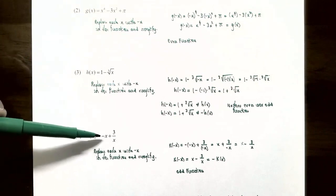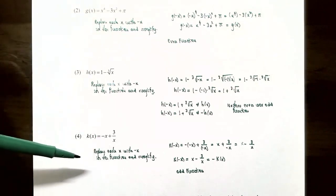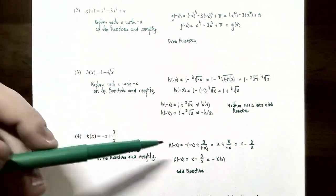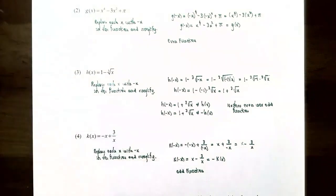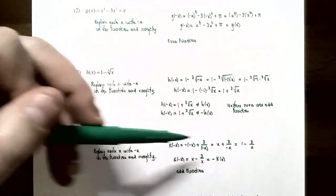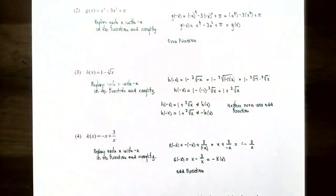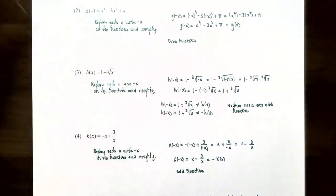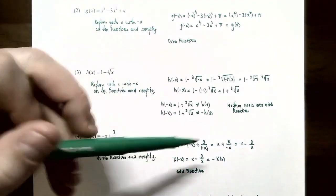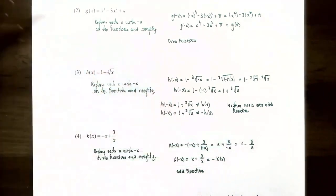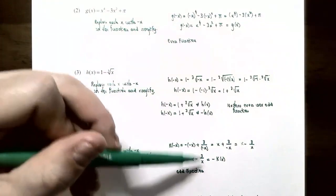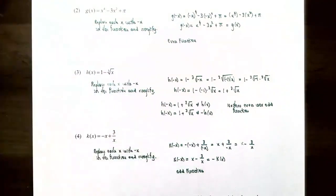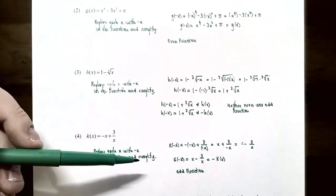Number four, k(x) = -x + 3/x. Replace each x with -x: k(-x) = -(-x) + 3/(-x) = x - 3/x. Notice that the first term changed sign from -x to +x, and the second term changed sign from +3/x to -3/x. Both terms changed sign, so k(-x) = -(−x + 3/x) = -k(x). This means k(x) is an odd function, and its graph is symmetric with respect to the origin.